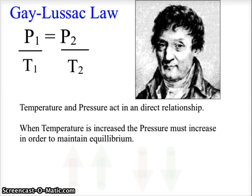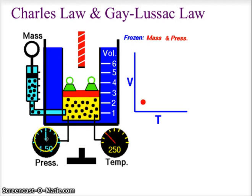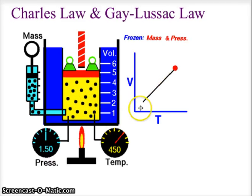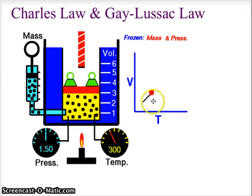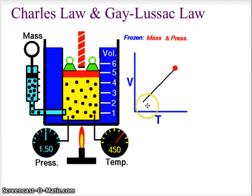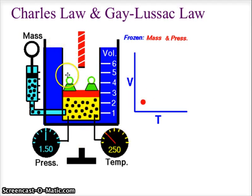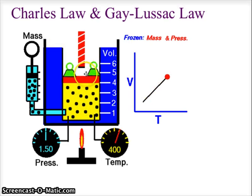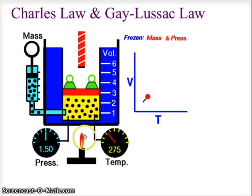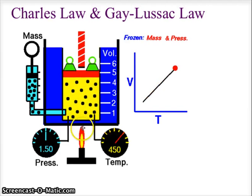So let's look at how this would look using this machine that we looked at earlier. Notice that this time the pressure is being held constant because we are looking at Charles Law — we're comparing volume to temperature. The Gay-Lussac Law works exactly the same, except it would be pressure and temperature, not volume and temperature. Notice the weights are not changing on this piston, so therefore we are not changing the pressure.